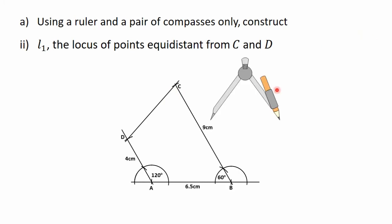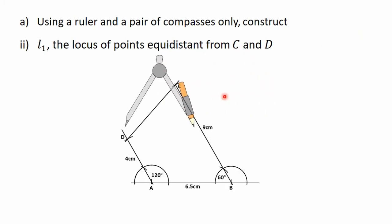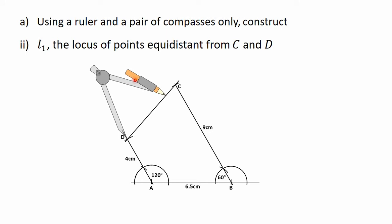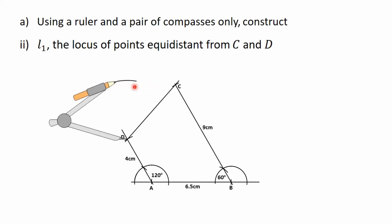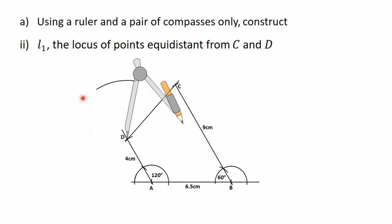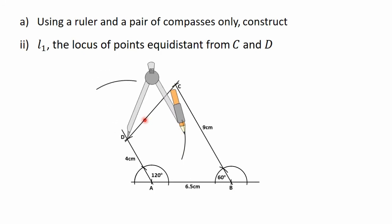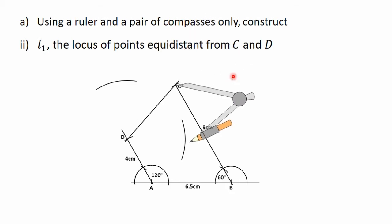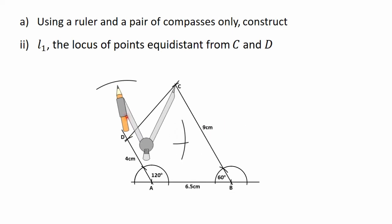To do that, I'll take the compass and put the needle on point D. Then I'll open the compass to more than half of the line CD. After that, I'll turn the compass and construct an arc, then turn it to this side and construct another arc. With the same radius, I'll move the needle of the compass to point C. After that, I'll turn it and construct an arc to intersect the first arc, then turn it to this side and construct another arc to intersect the first one.